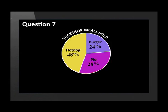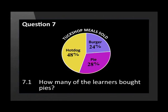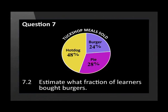Question seven. Here is a pie chart that shows the type of lunches bought at the school tuck shop by 50 learners. 7.1: How many of the learners bought pies? 7.2: Estimate what fraction of learners bought burgers. 7.3: Estimate what fraction of learners bought hot dogs.